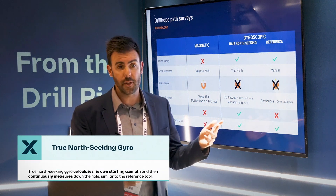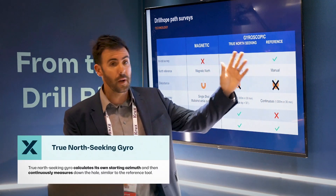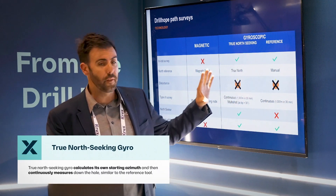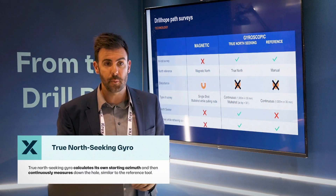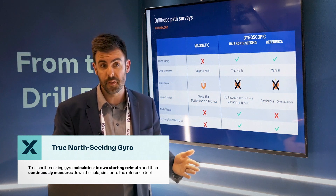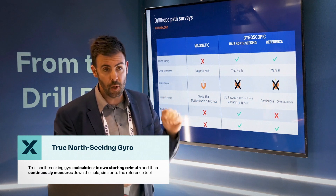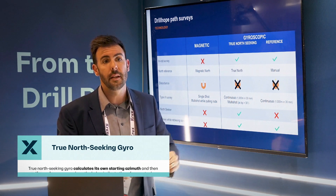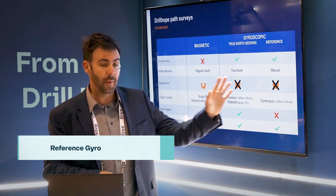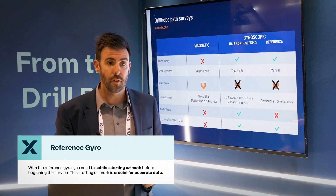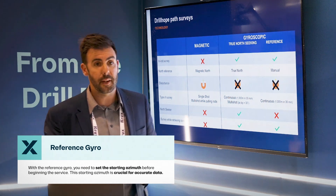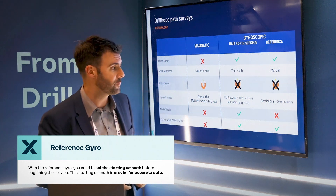When we look at gyroscopes, there are two types: true north-seeking gyros and reference gyros. In essence, the key difference is that a true north-seeking gyro calculates its own starting azimuth and then runs continuously to the bottom of the hole. A reference gyro, however, requires you to input a starting azimuth before beginning the survey.